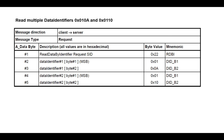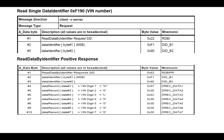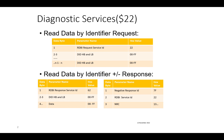The NRC codes supported by this service are: 0x13 (incorrect length or invalid format), 0x14 (response too long), 0x22 (conditions not correct), 0x31 (request out of range), and 0x33 (security access denied). The 0x33 NRC occurs when the server is not in an unlocked state and you try to read the data. The negative response format is 0x7F followed by the service ID followed by the NRC.